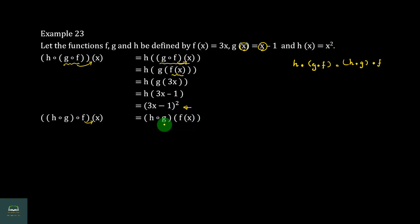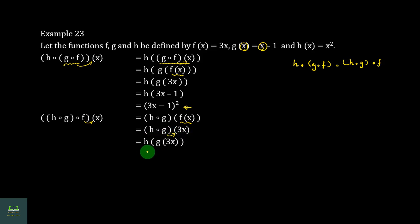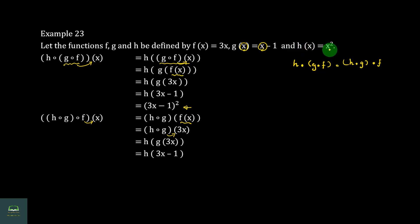This is h of g of f(x). The f(x) = 3x goes out to h of g of 3x. G of 3x = 3x minus 1. H of (3x minus 1) gives us (3x minus 1) squared.